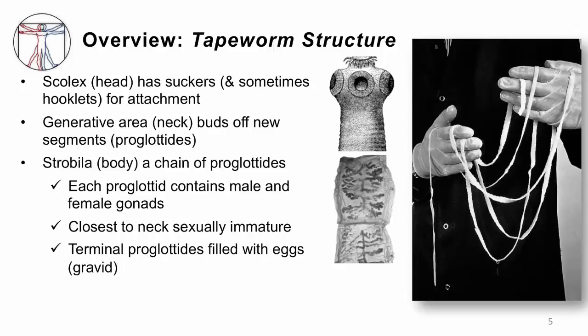Each proglottid has both male and female gonads — these are self-fertilizing hermaphrodites. The ones that come off the neck are immature, but by the time you reach the far end, which can be meters away, they are filled with eggs and are pregnant, ready to reproduce.